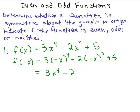Now, negative x to the fourth power is just x to the fourth, and negative x to the second power is just x squared. So we've simplified this, and the question is: is this the same function, or is it the opposite of the original function?